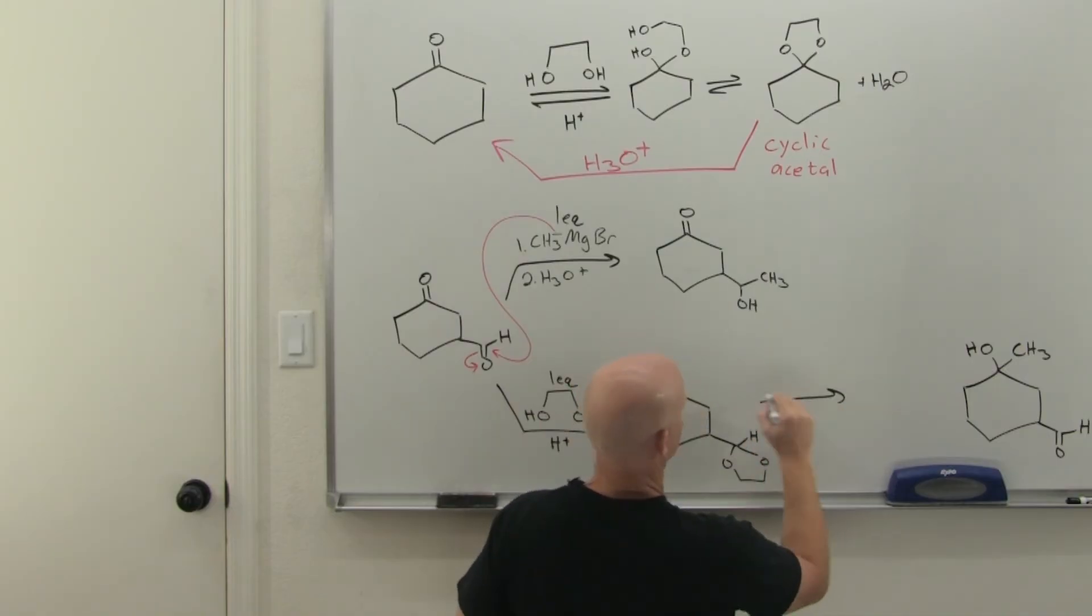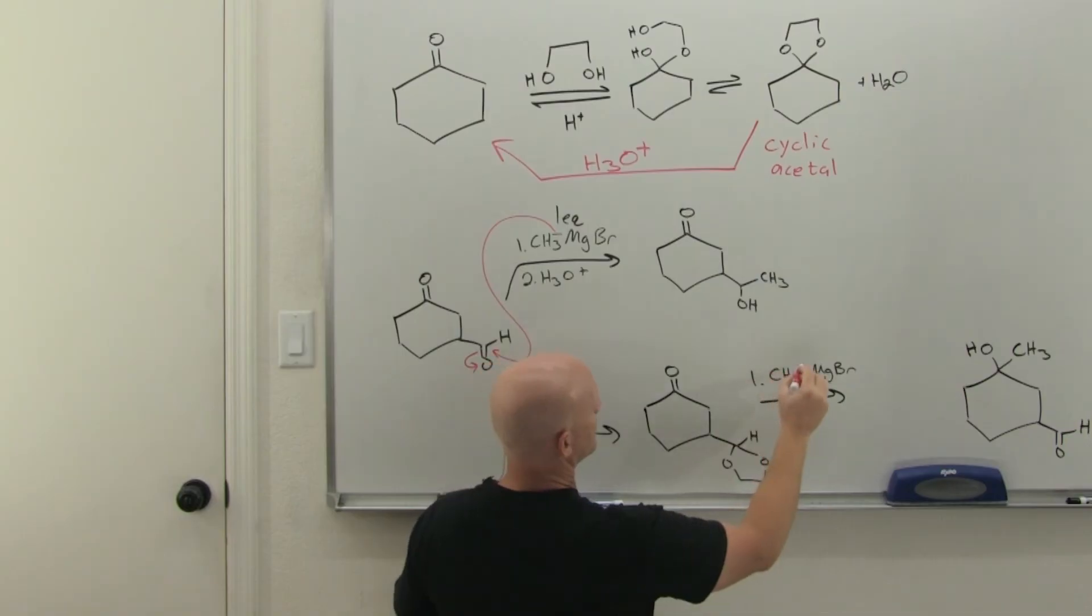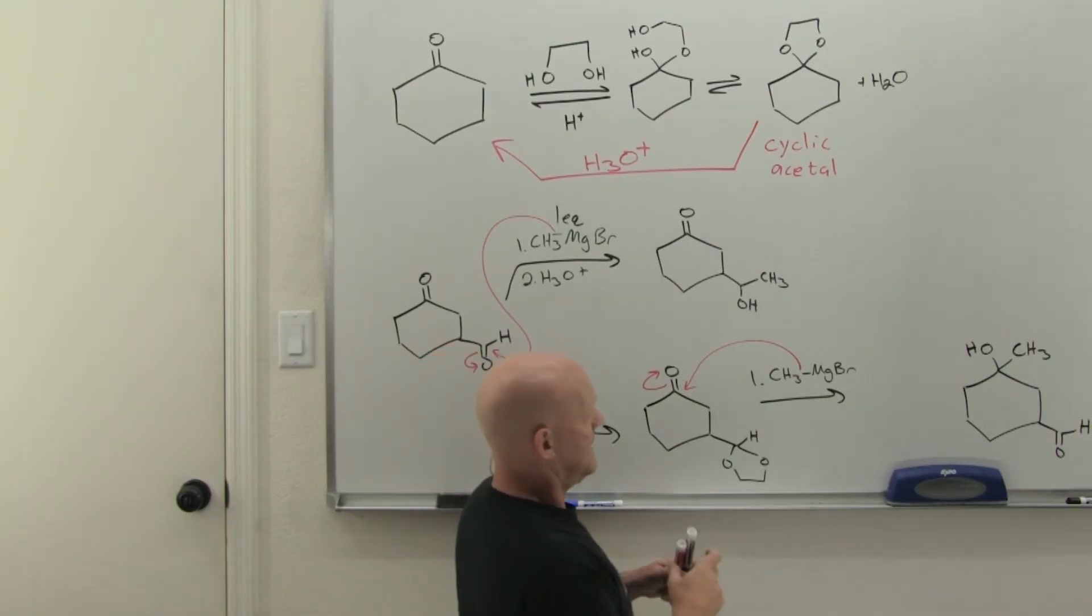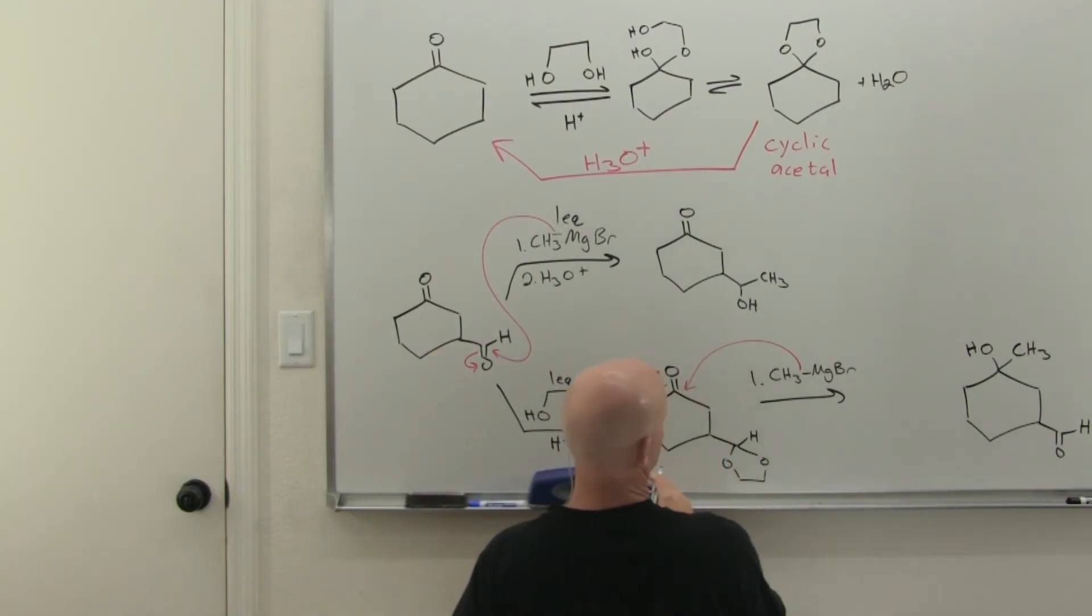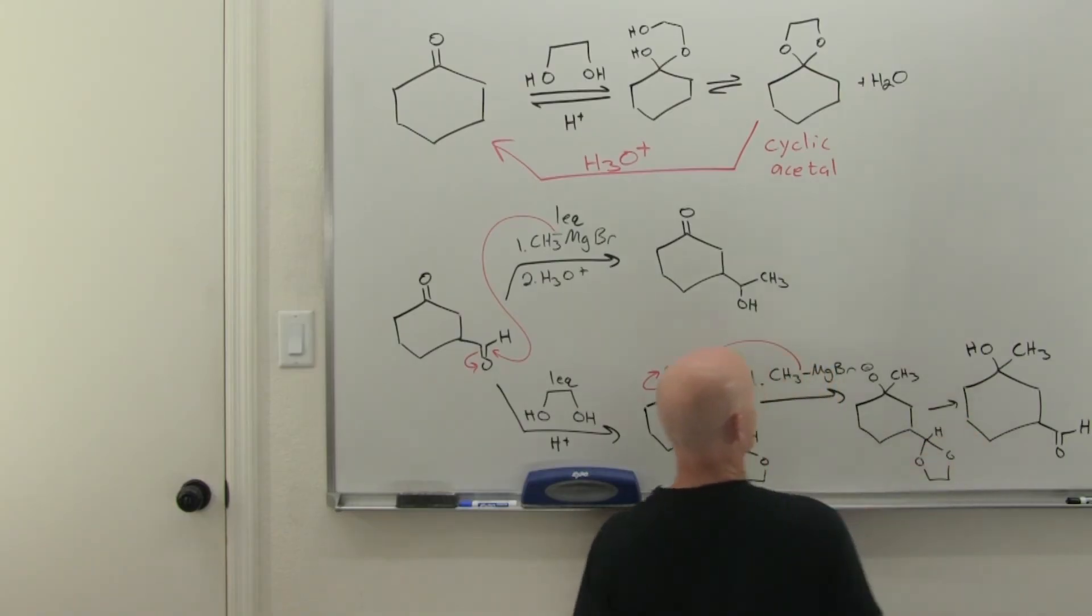And so now we'll go ahead at our Grignard reagent. And that Grignard reagent looks at the cyclic acetal says, you're unreactive to me. You're not an electrophile. But you, sir, the ketone are a good electrophile and comes and reacts. And so this is going to form an alkoxide with our methyl group attached there. We still have this protected aldehyde.